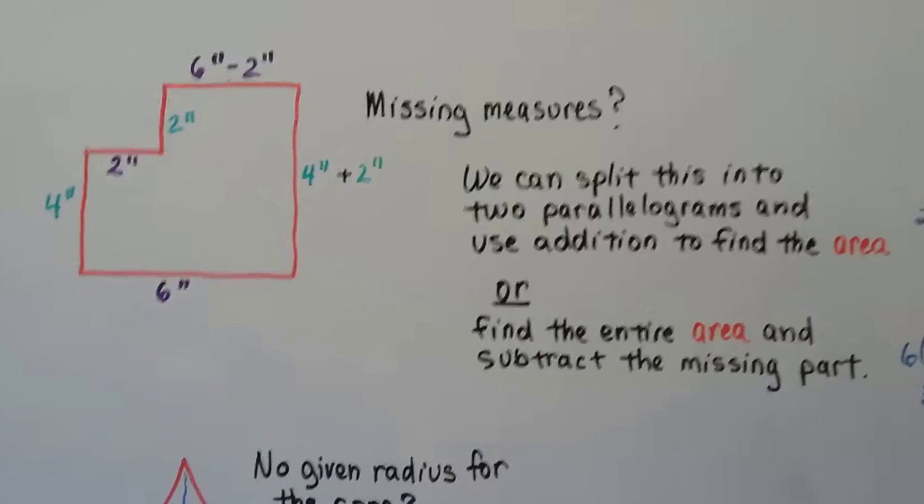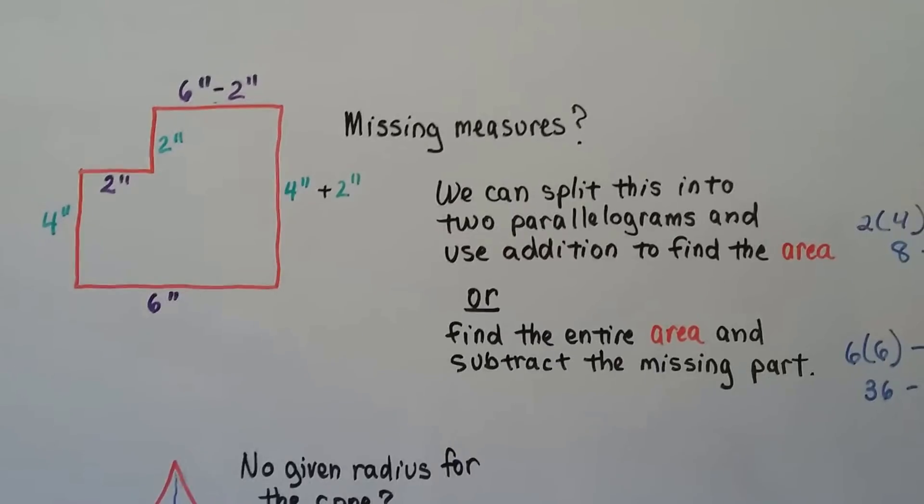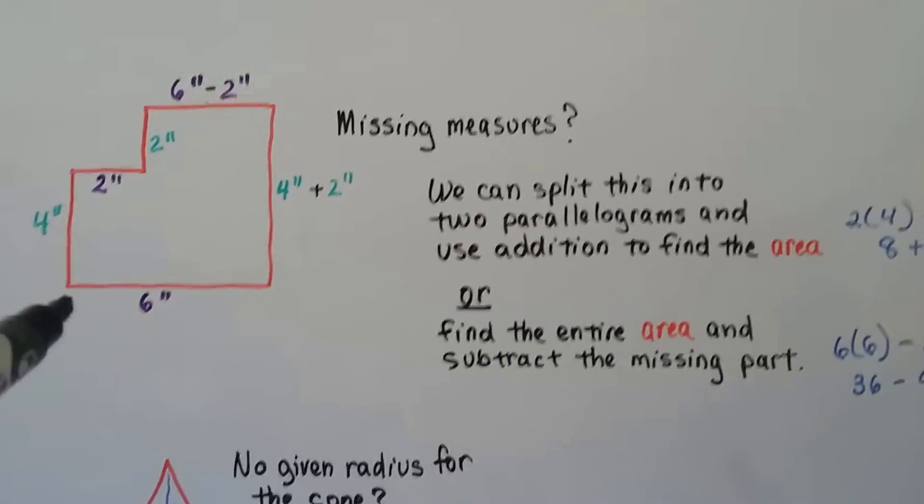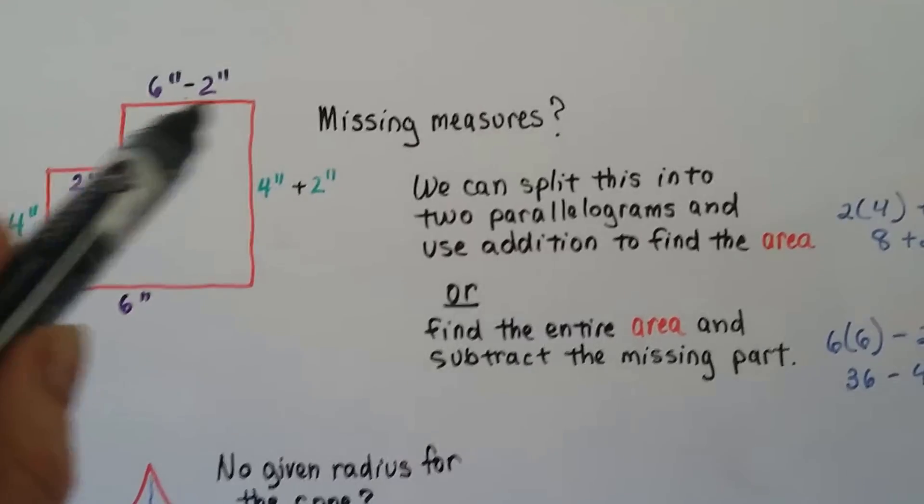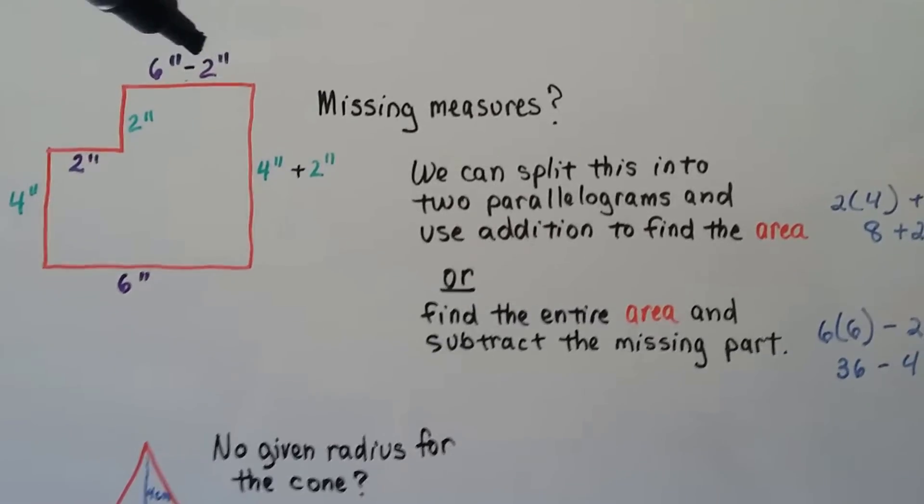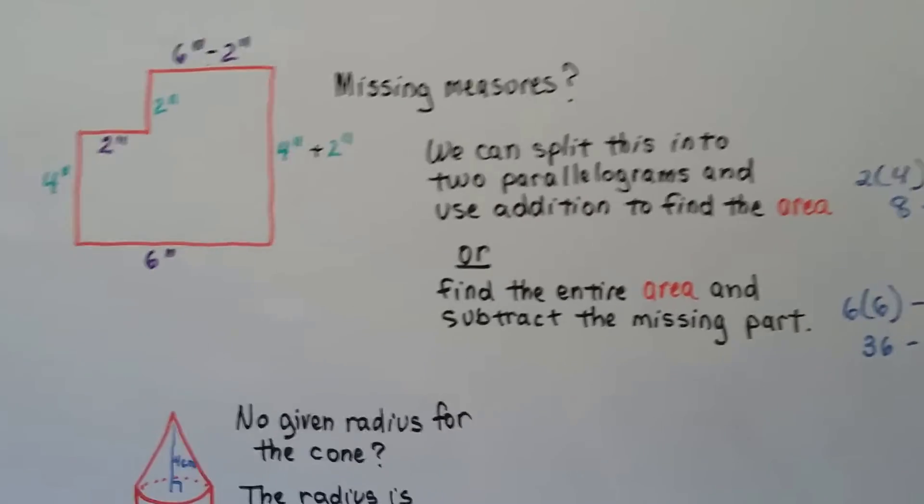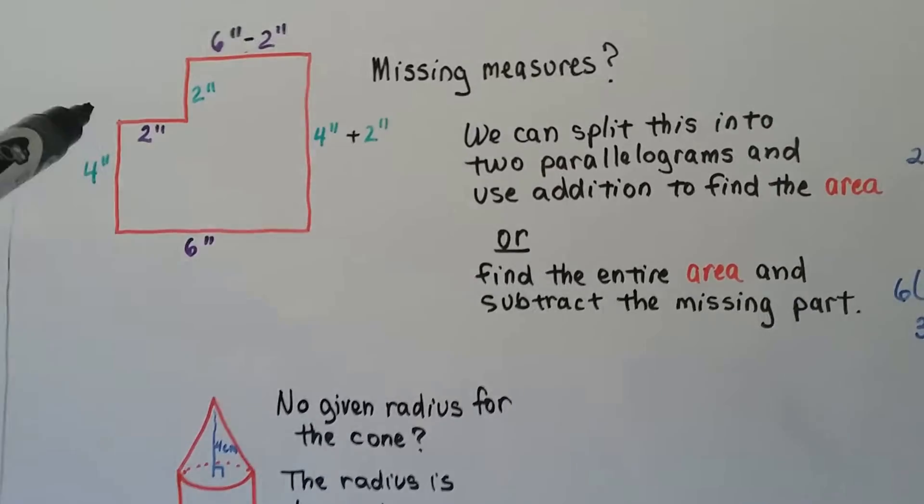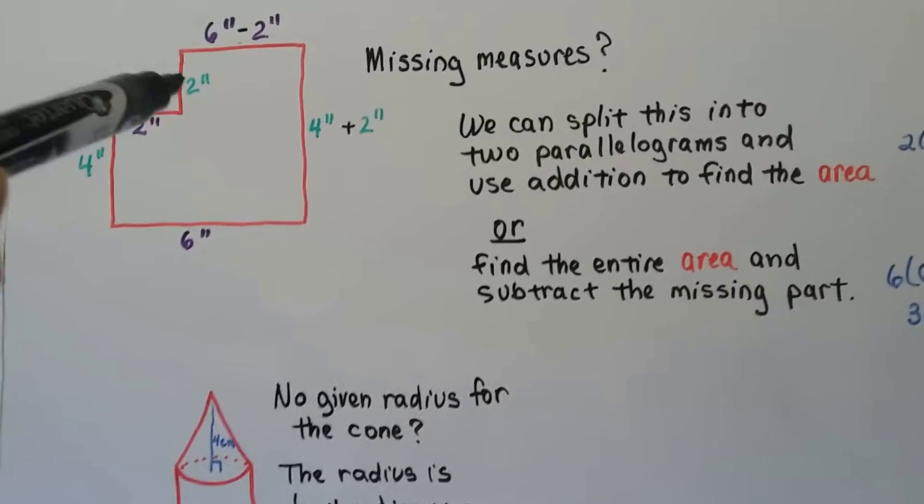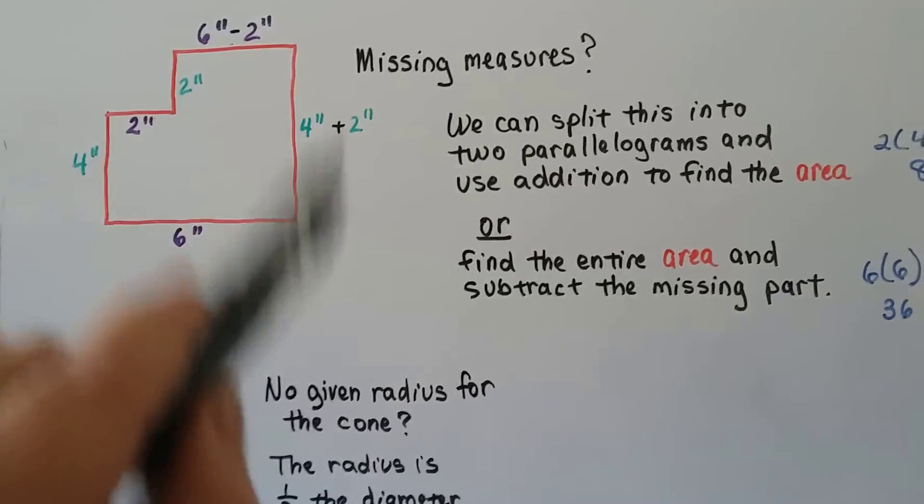Now, sometimes you're going to come across diagrams with missing measures, and you can use common sense. If this is 6 inches, and this is 2 inches, and we need to find this one, well, it's 6 minus that 2. So that would be 4. If this one's missing, we can see that's 4 inches, that's 2 inches. Together, that would be 6.